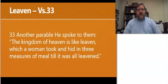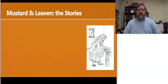And then he moves on to another story. Another parable he spoke to them. The kingdom of heaven is like leaven, which a woman took and hid in three measures of meal, till it was all leavened. But this is a baking story. This is a cooking story. This is about making bread and how you put leaven in it to rise.